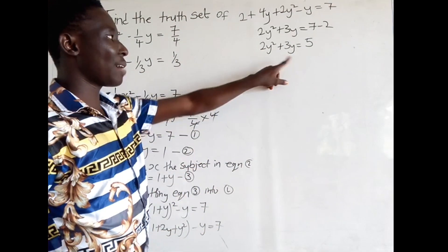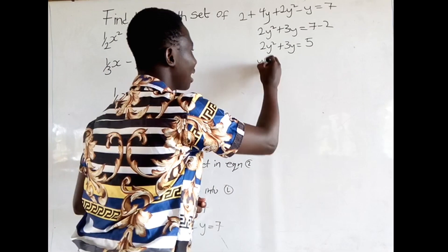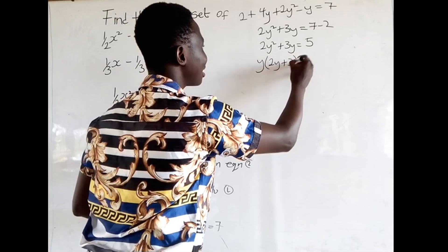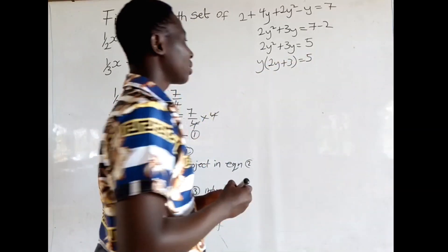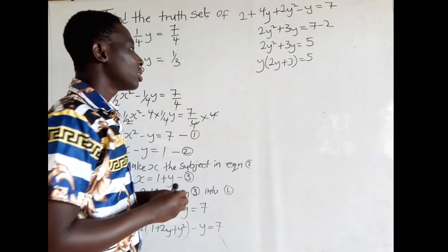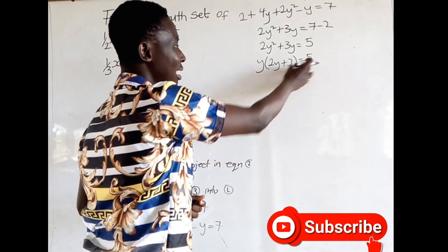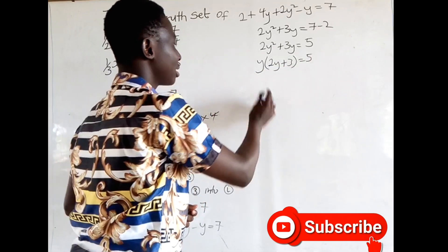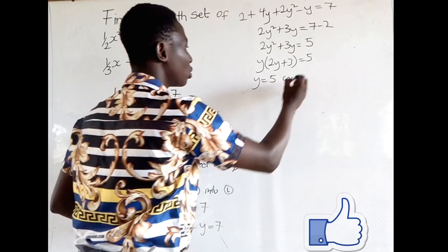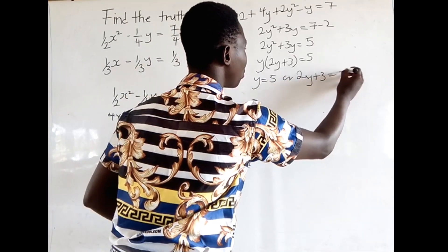We can factor out, so y times (2y plus 3) is equal to 5. From this we can equate: y is equal to 5, or 2y plus 3 is equal to 5.